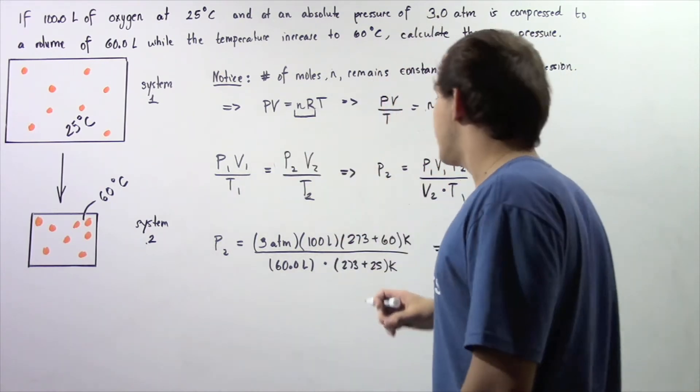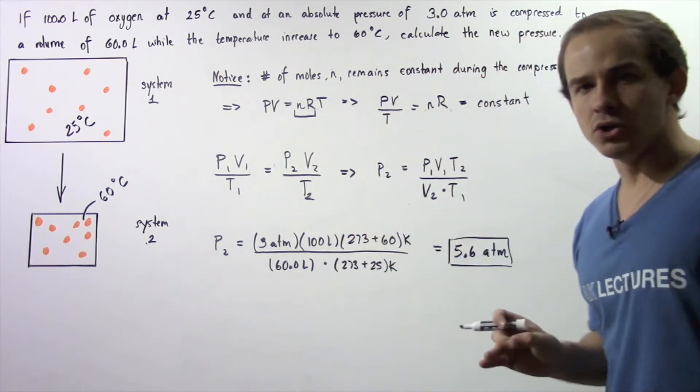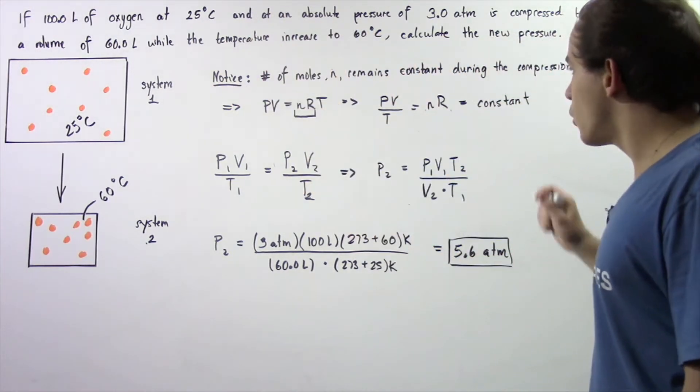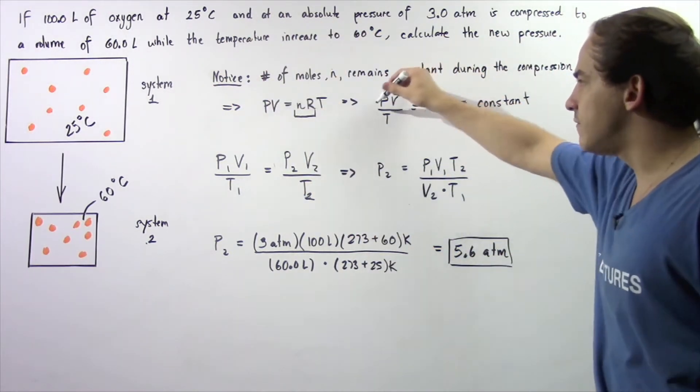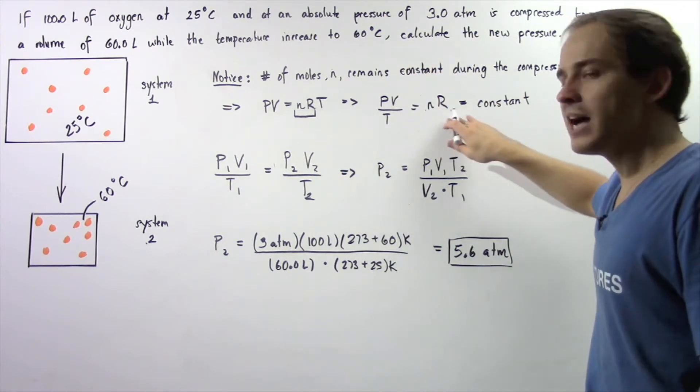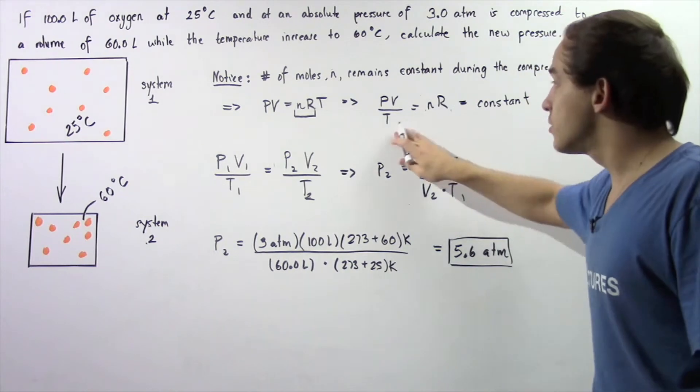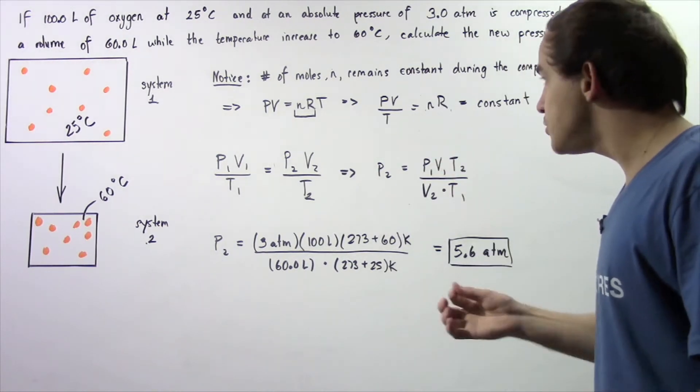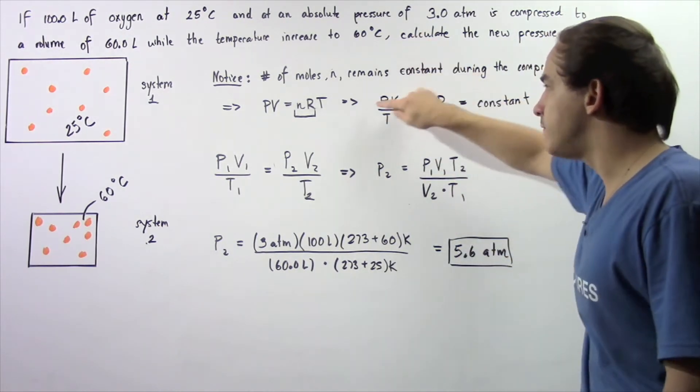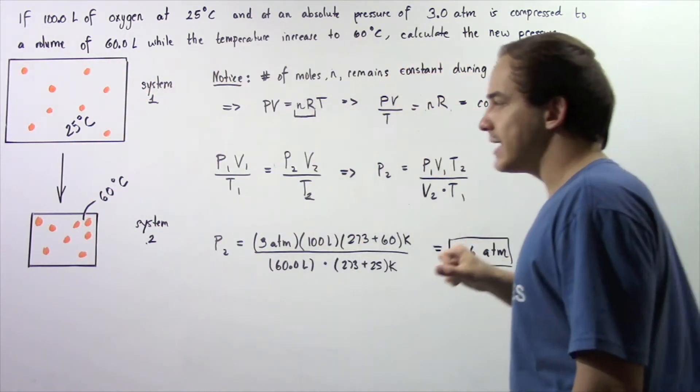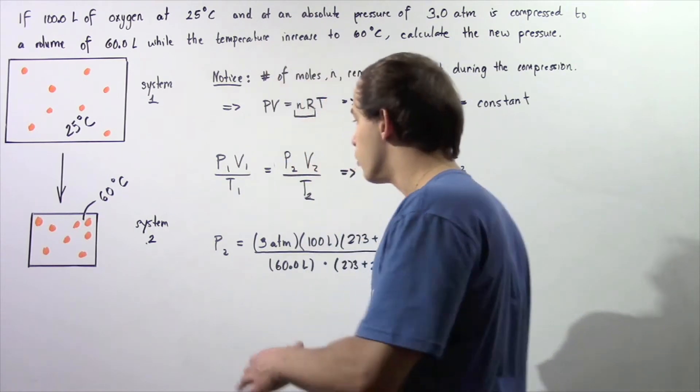So let's take this equation and bring all the variables from the right side to the left side of our equation. So we have P times V divided by T is equal to N times R, and this is equal to a constant. So that basically means that the ratio of PV divided by T of system one is equal to PV divided by T of system number two.